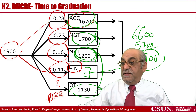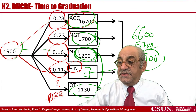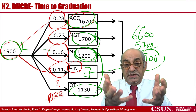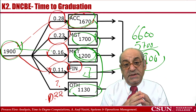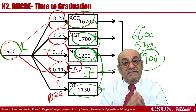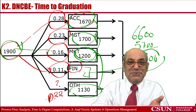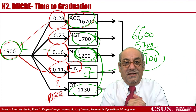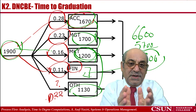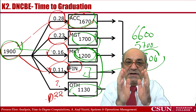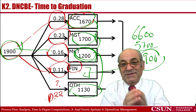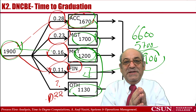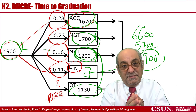Now I have the percentage of throughput for each department. If I multiply them by the total of 1,900, I will get the actual throughput in terms of students. I have the headcount as inventory. I have throughput and I have inventory, and I can apply Little's Law to compute the flow time of a prototype student in each of these four major departments and the other departments.